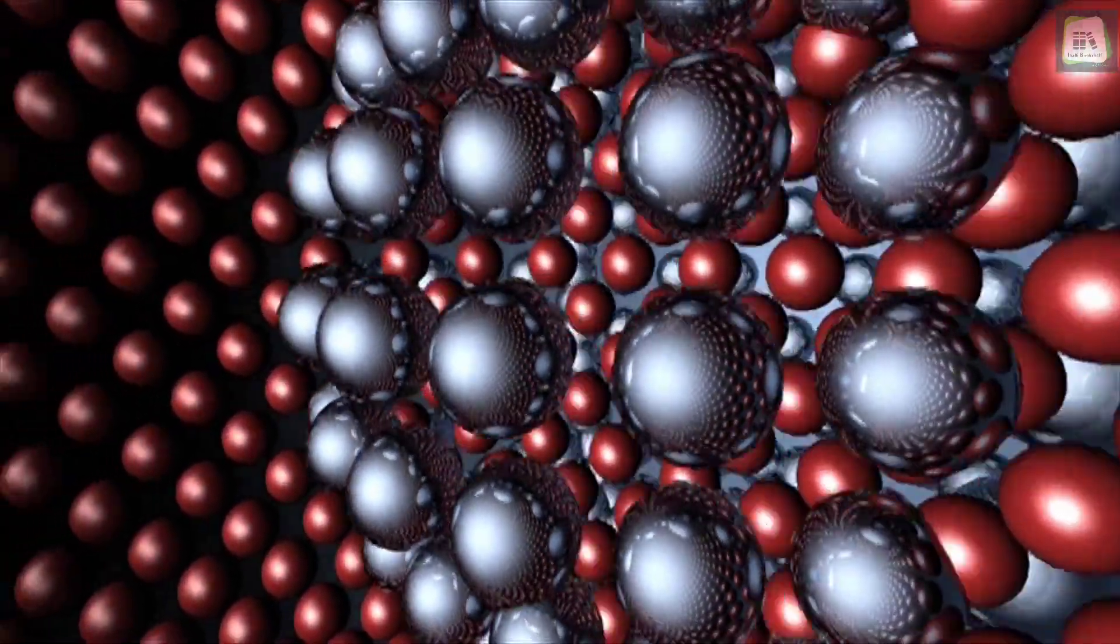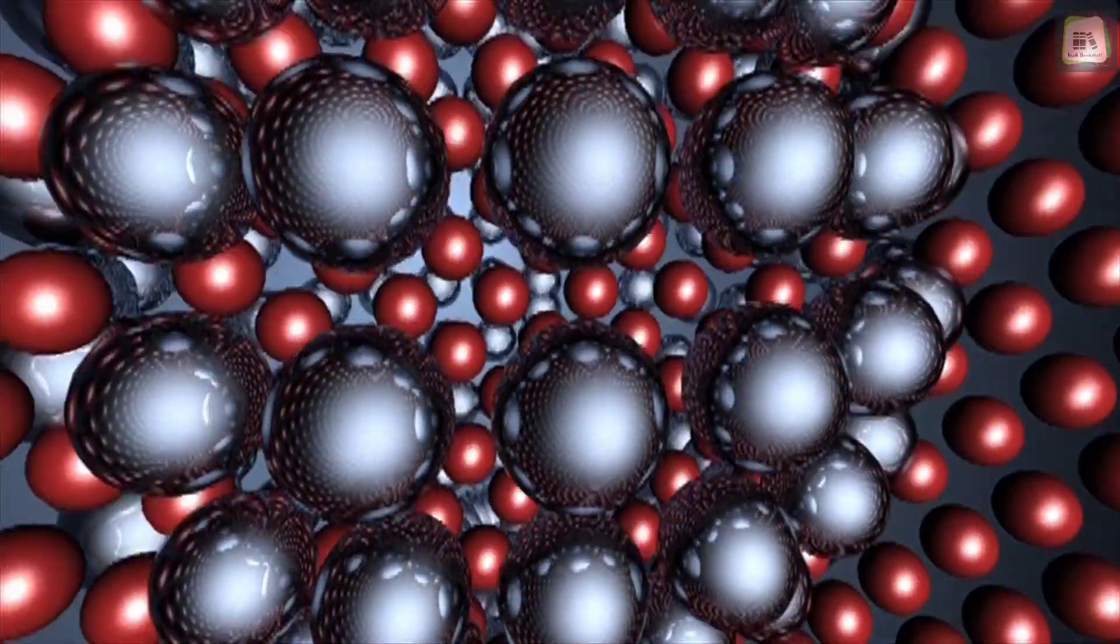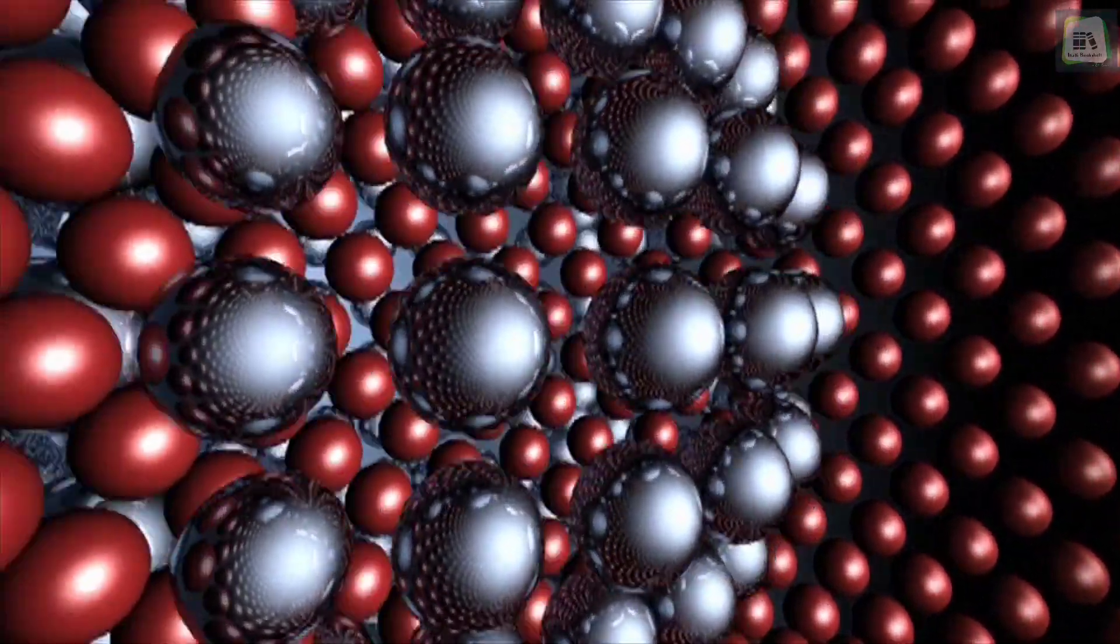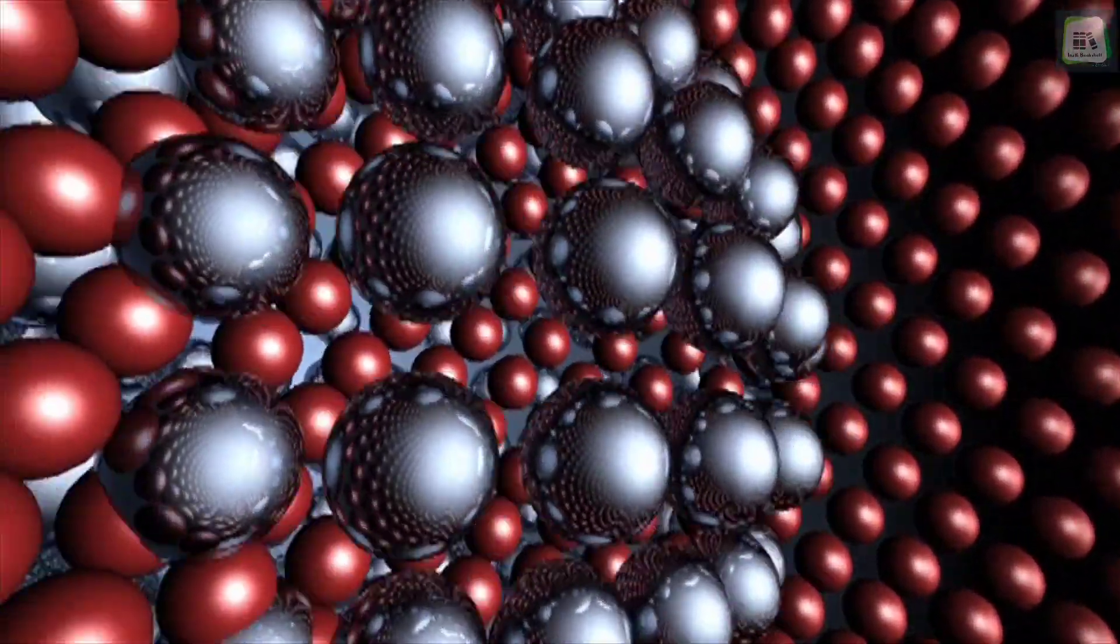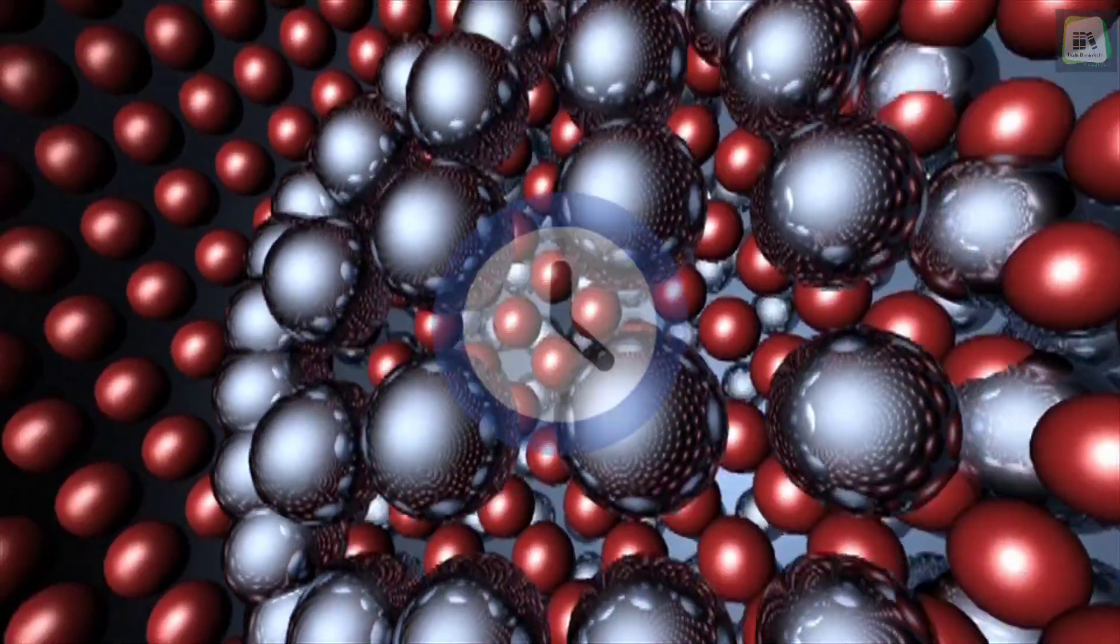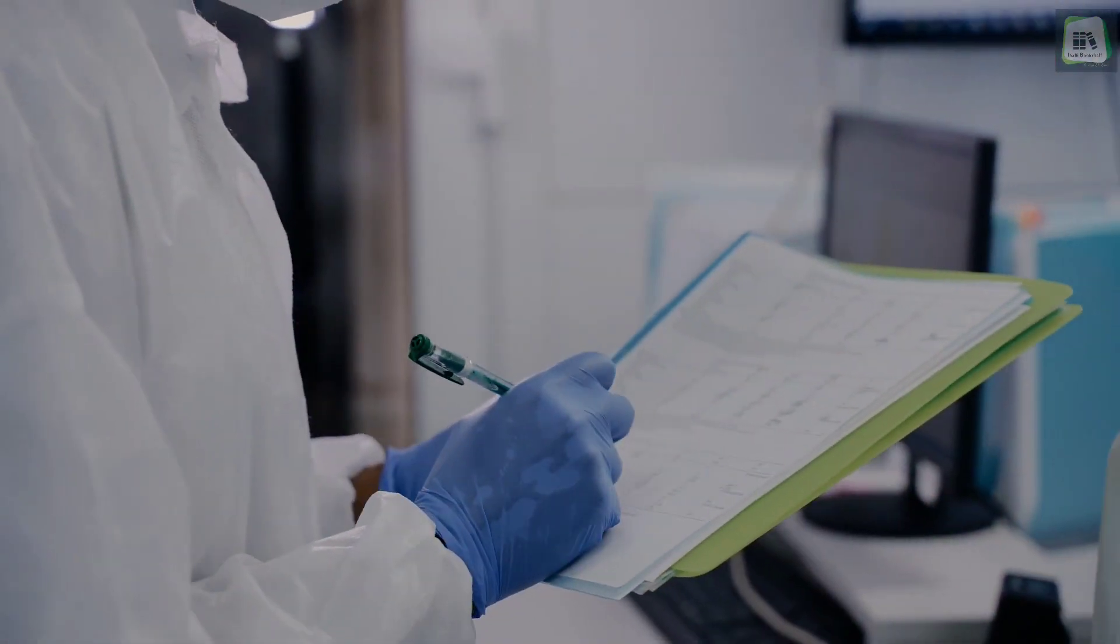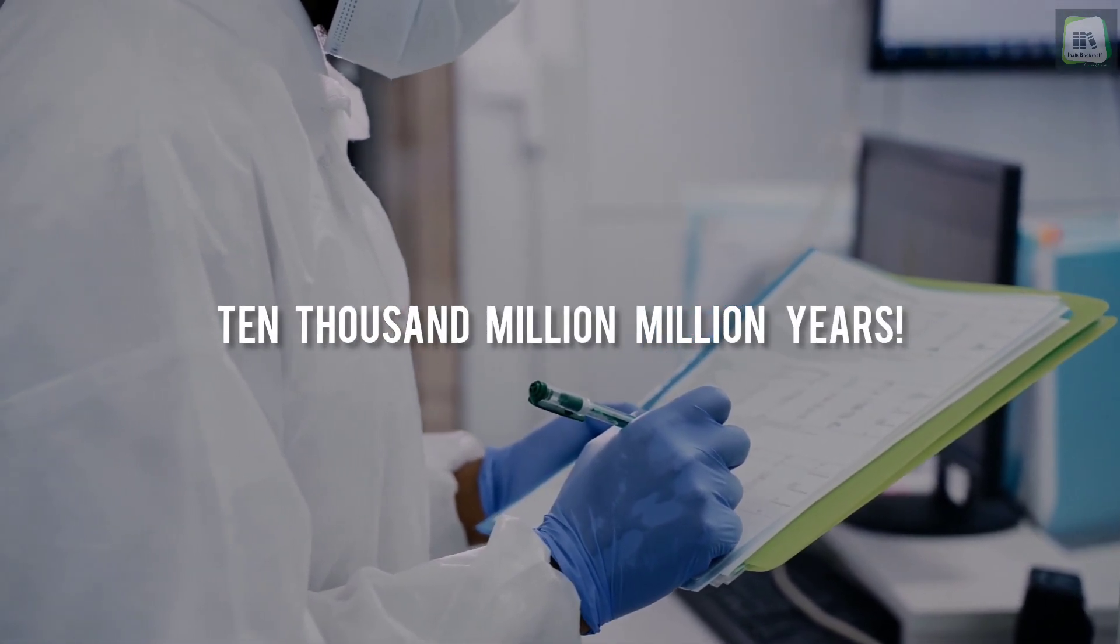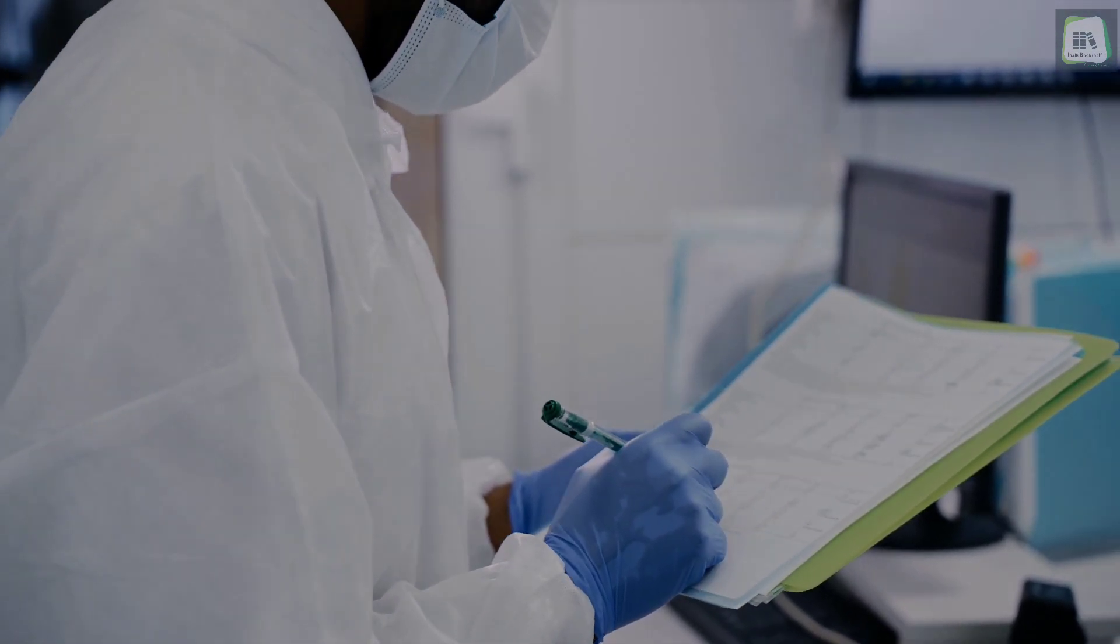To give you another idea of how small atoms are, let's see how many atoms there would be in 1 gram of hydrogen. The answer is about 6 followed by 23 zeros. If you start to count them and counted 1 atom per second, it would take you 10,000 million million years to count all the atoms in just 1 gram of hydrogen.